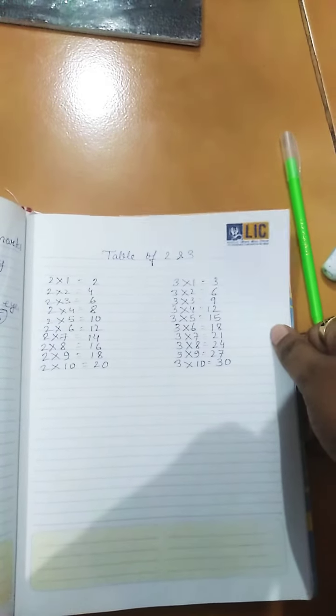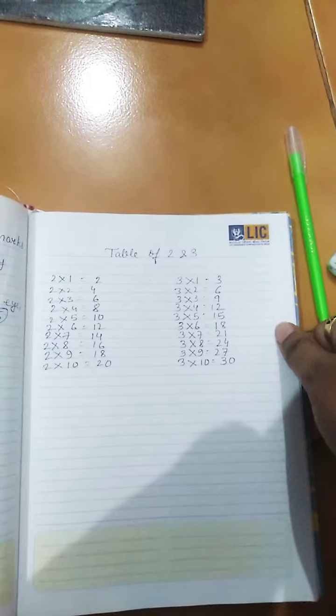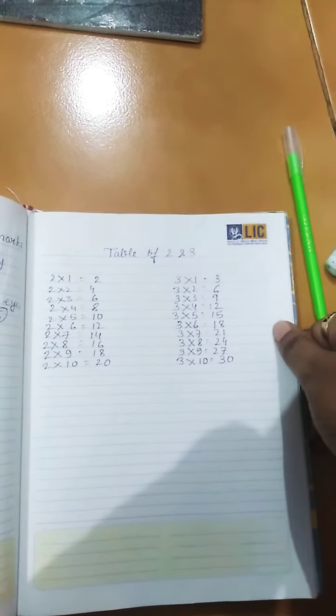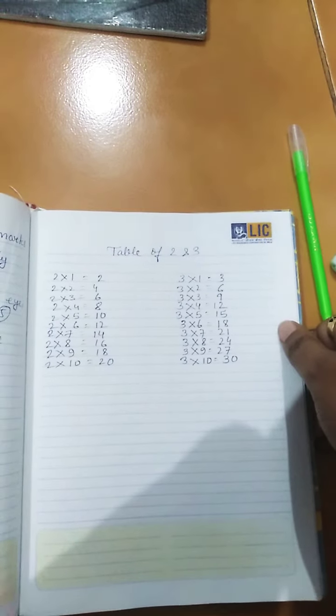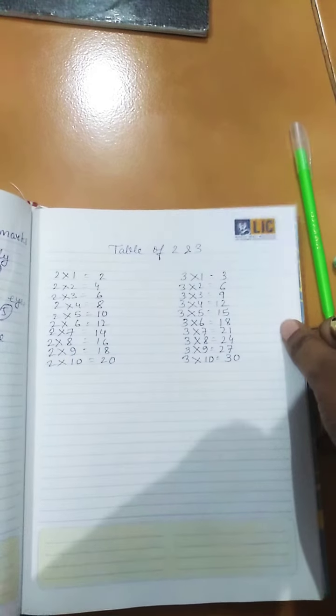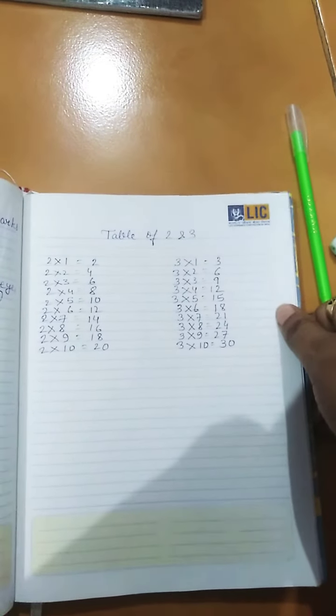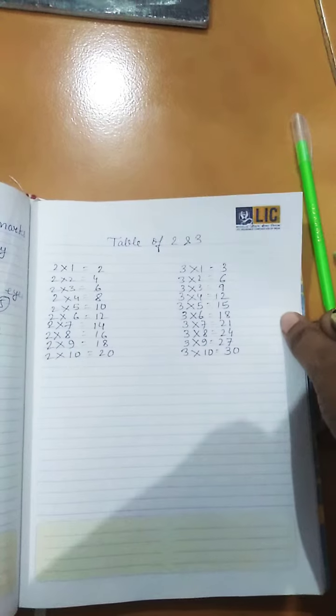We all know that there are tables from 2 to 20. We will learn gradually all the tables and we'll also learn and write. So today we will not do anything else more, we will do table.